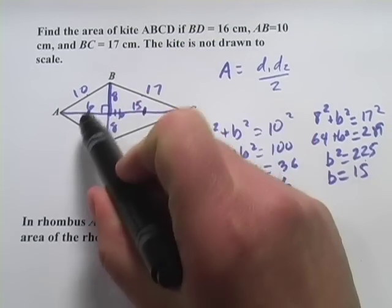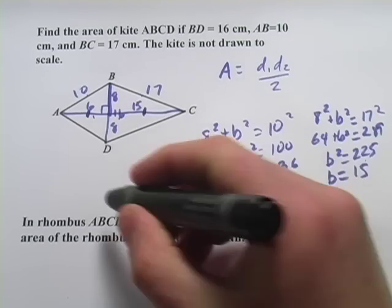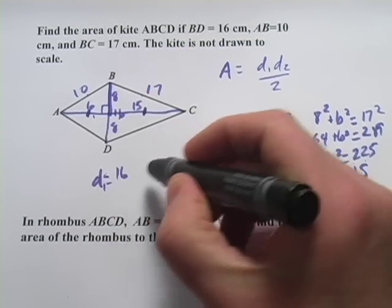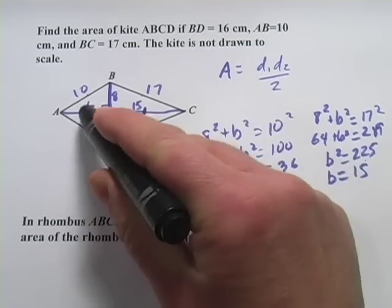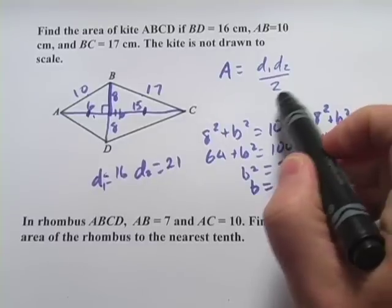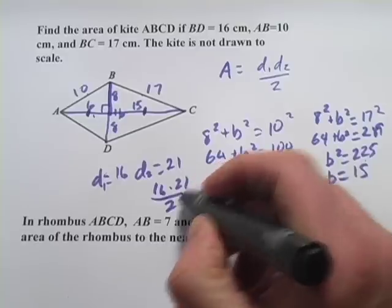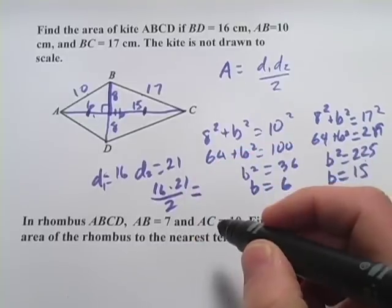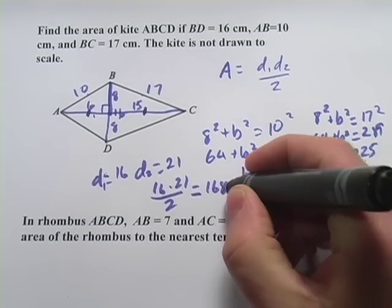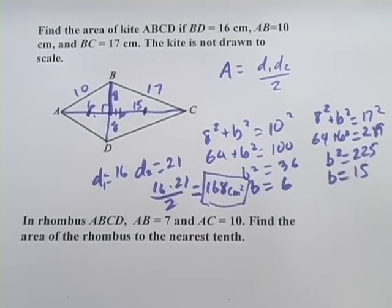Now, to get this whole diagonal, I just have to add those two parts together. So 6 plus 15. So diagonal 1, that's this one, that was 16. They told us that. So diagonal 1 equals 16. Diagonal 2 equals 6 plus 15, that's 21. So to find the area now, all I have to do is plug it into this formula. That's 16 times 21 divided by 2. And let's see. That equals 168. And remember, this is area, and the units were centimeters. So this is square centimeters. And that's our answer.